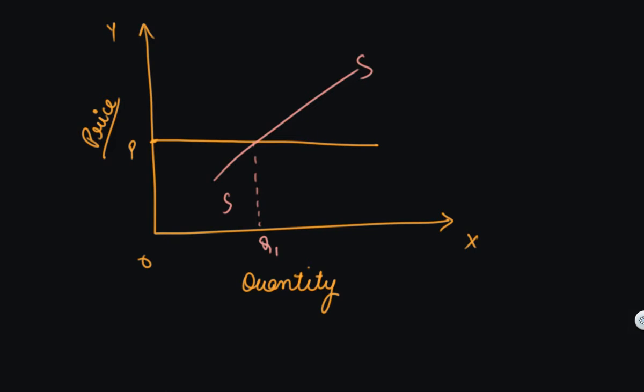Now let's say there is an increase in the factors of production. So what will you do? You will reduce your quantity supplied to Q2 and this will be a new supply curve. So this is due to the increase in input prices.